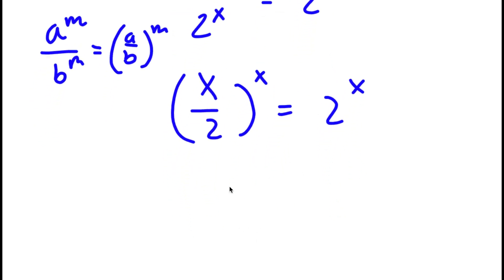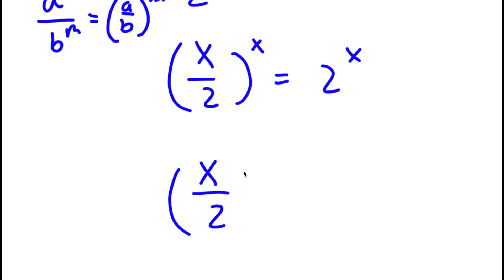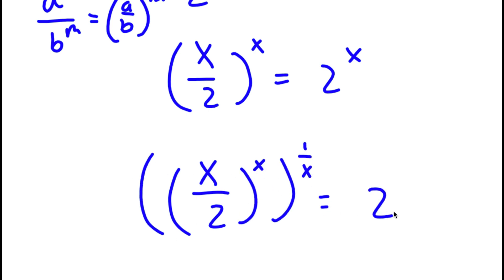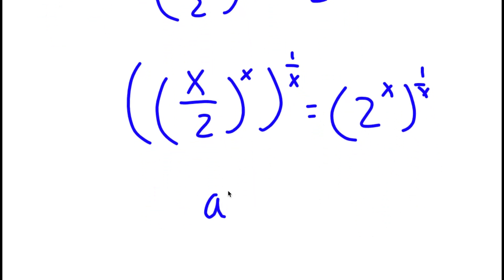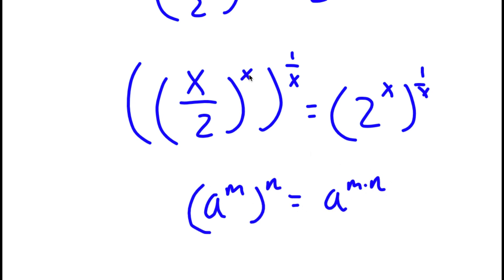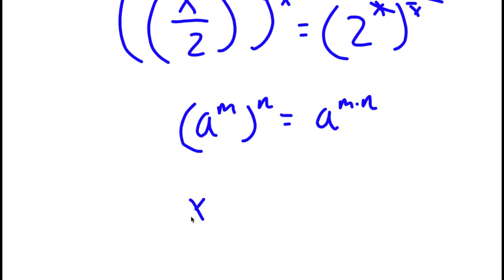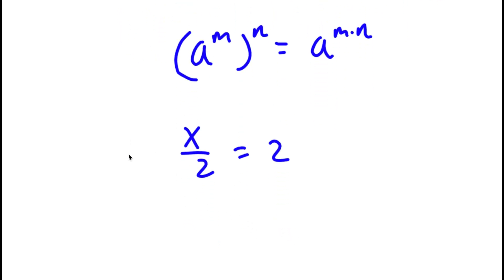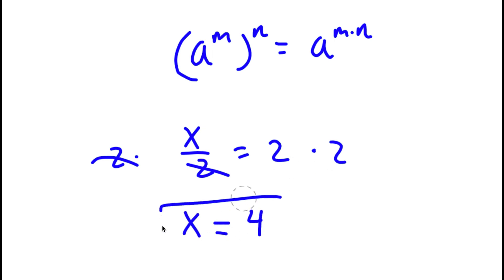I'm going to take the power of 1 over x on both sides. So now I have x over 2 to the power of x to the power of 1 over x equals 2 to the power of x to the power of 1 over x. If I have a to the power of m to the power of n, this equals a to the power of m times n. So x times 1 over x cancels out, and I'm simply left with x over 2 equals 2. Multiplying both sides by 2, x equals 4.